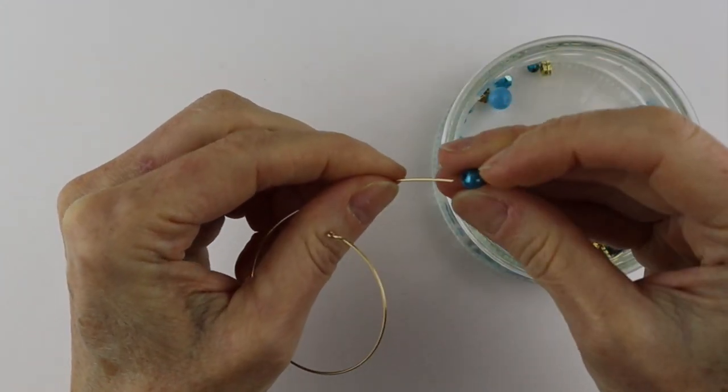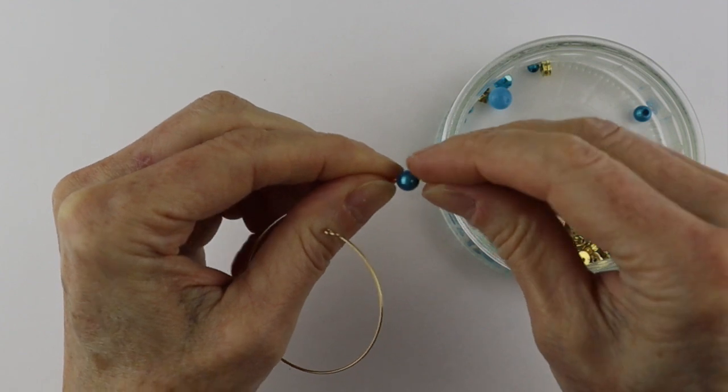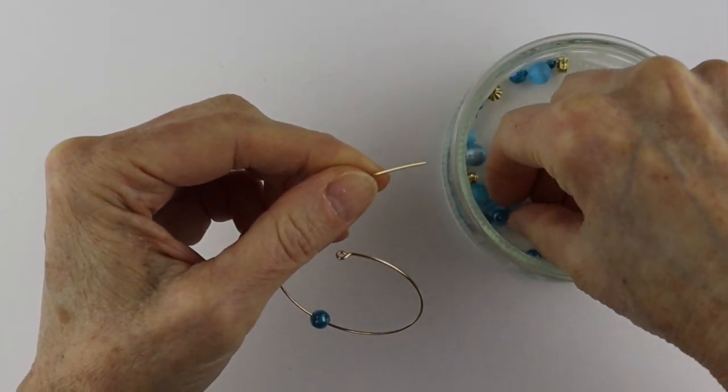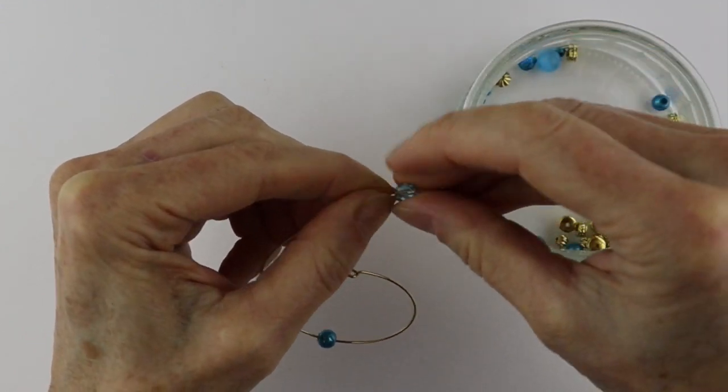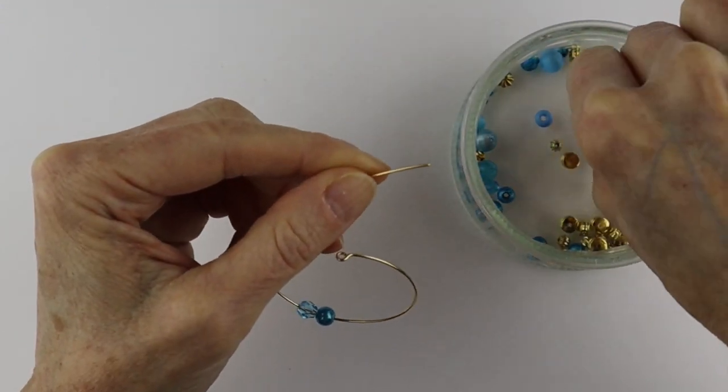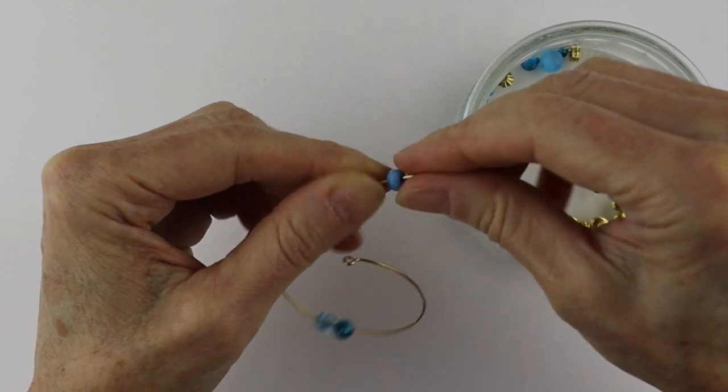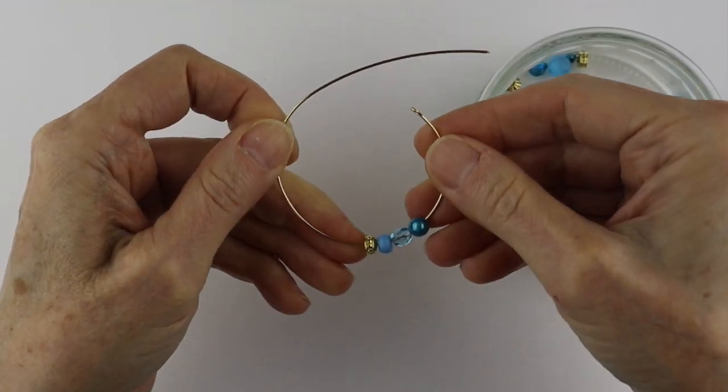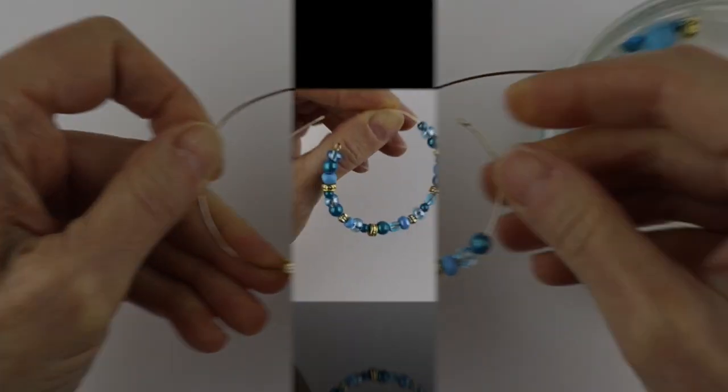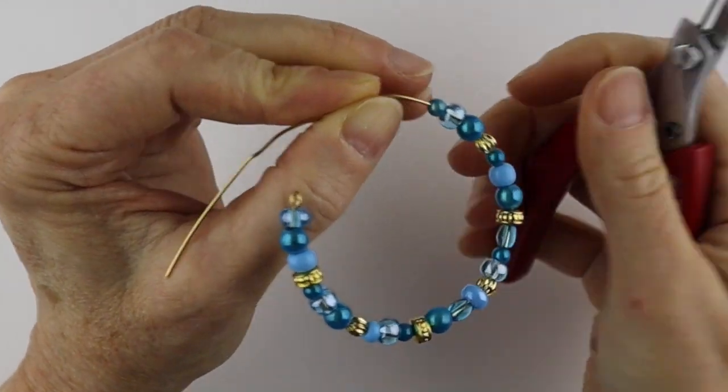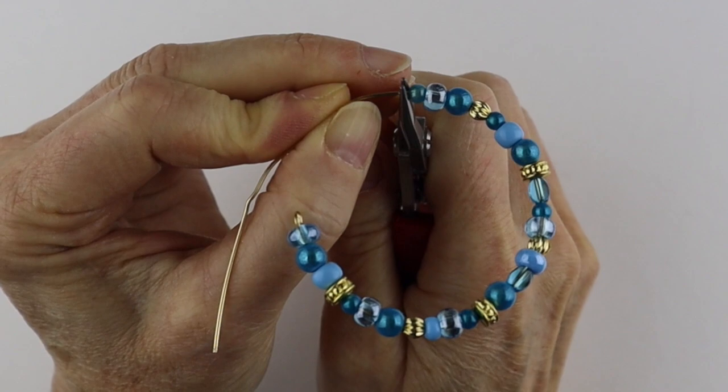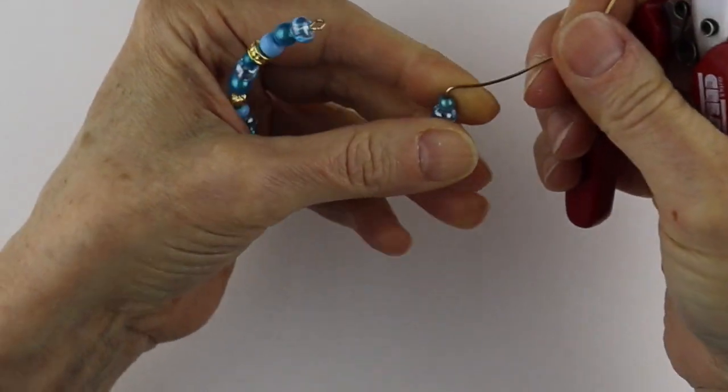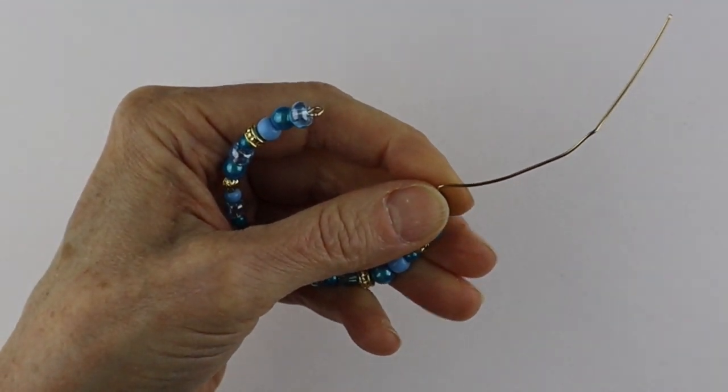From there, take your beads and just bead around the circle. I sometimes like to do a set of three beads and then in between the three beads I put a little metal spacer bead. You can do a pattern or just randomly. Once you bead it all the way around, take your small pliers and bend this at a bit of a right angle. Then you can trim it because it's probably going to be too long.